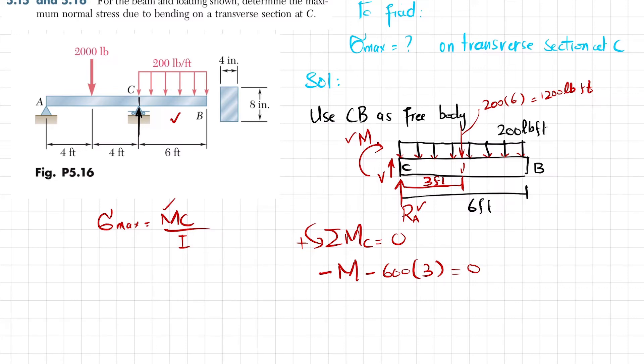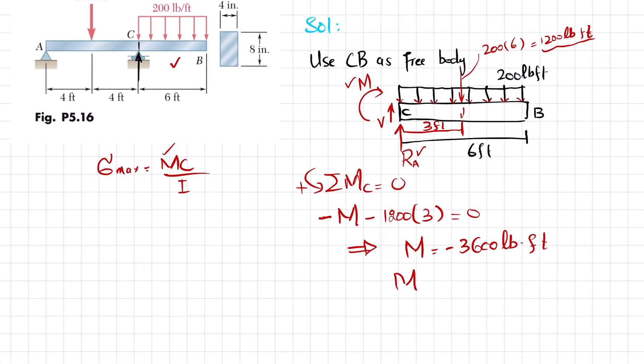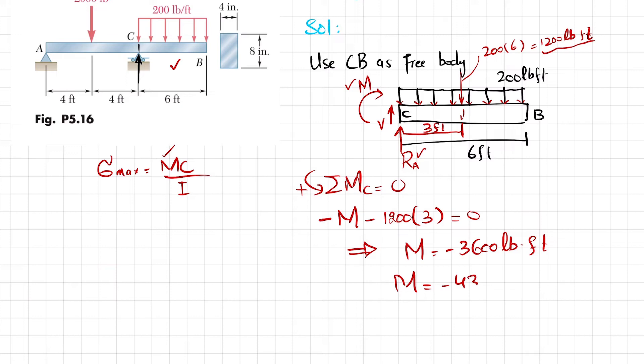So 200 times 6 is 1200, not 600, this is 1200 times 3. From here you get the moment at point C which comes out to be minus 3600 pound-feet. If you convert it to inches, multiply by 12, so the moment equals minus 43.2 times 10 to the power 3 pound-inches.